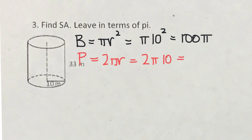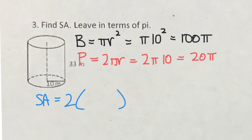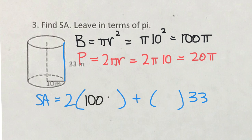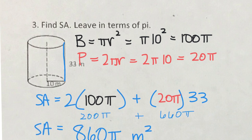For a cylinder or cone, the base area is pi r squared and the base perimeter (circumference) is 2 pi r. Plugging into the surface area formula — two base areas plus base perimeter times height — with height 33, we get 2 times 100 pi plus 20 pi times 33, for a total surface area of 860 pi square meters. Multiply the numbers and just attach the pi at the end.